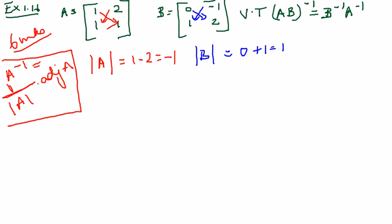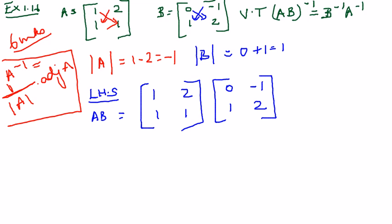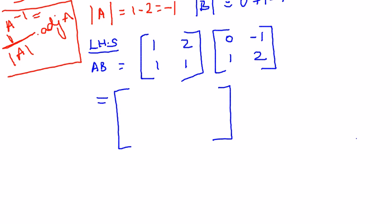Shall we first do the left-hand side? We will multiply A into B. For matrix multiplication: this into this plus this into this. So 1 into 0 is 0, plus 2 into 1 is 2. Then the next element: 1 into minus 1 is minus 1, plus 2 into 2. So minus 1 plus 4 gives plus 3. Next row: 1 into 0 is 0, plus 1 into 1 is 1. And the last element: 1 into minus 1 is minus 1, plus 1 into 2. Minus 1 plus 2 is plus 1. So this is AB.